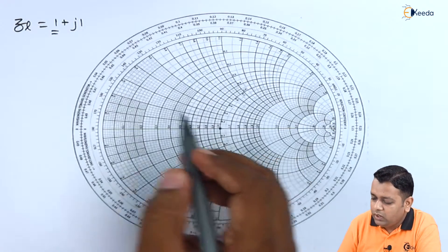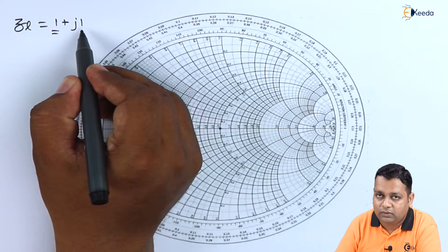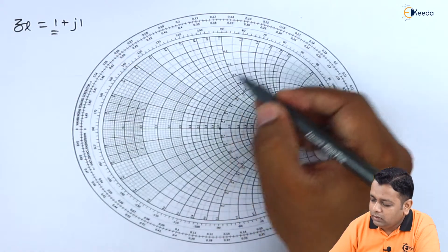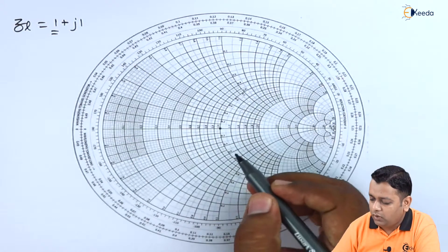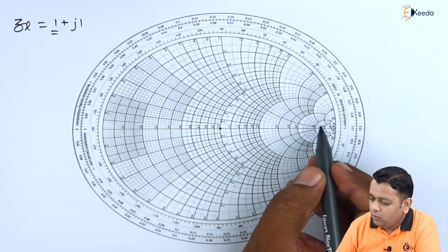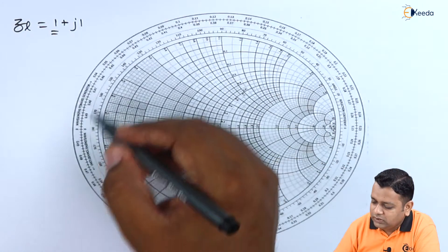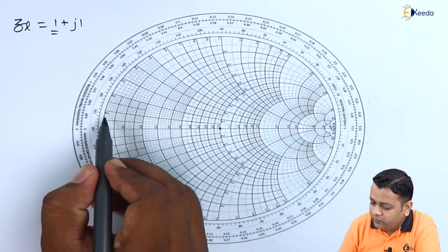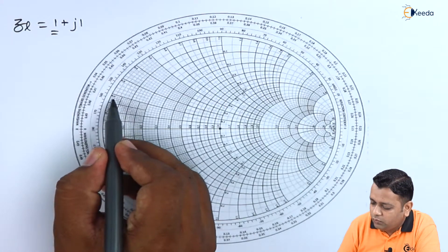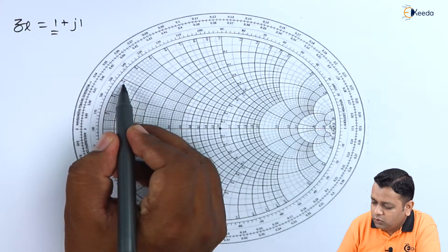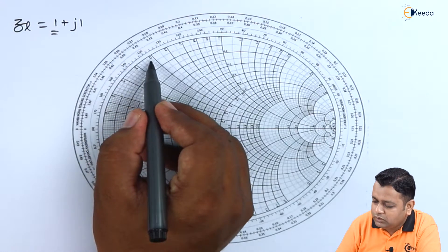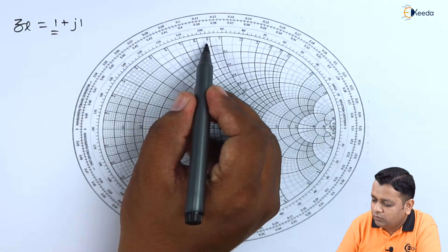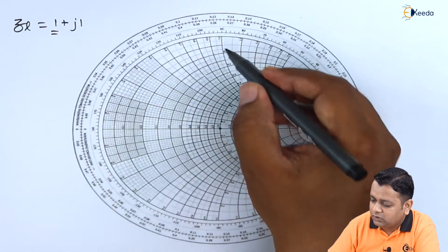From the center, we have to go for J1. Since it is positive, we go into the upper half. On the upper half, we see the values because of the constant X circles: 0.1, 0.2, 0.3, 0.4, 0.5, 0.6, 0.7, 0.8, 0.9, and 1.0.